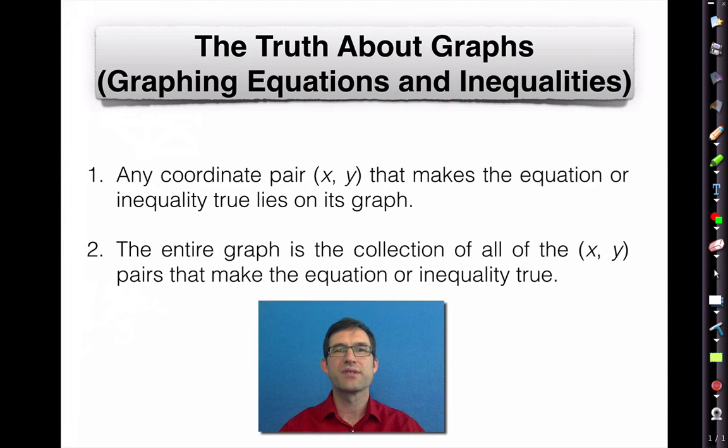It is exceptionally important to understand the following truth about graphs, whether that's the graph of an equation or inequality. Take a look at these two points because they are critical. Any coordinate pair (x, y) that makes the equation or inequality true lies on its graph. It's that plain and simple. And the entire graph is simply the collection of all the (x, y) pairs that make the equation or inequality true. You should know whether any point lies on the graph of an equation by simply checking to see if the equation is true. So today we're really going to be getting into that idea and playing around with it, as well as learning about systems of equations and inequalities.